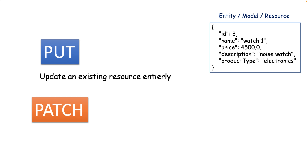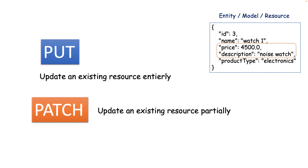However, PATCH is recommended for partial update. Let's say you have 10 fields or more on your entity and you want to update only partial fields or a few fields from the object, then you can go for the PATCH HTTP method.